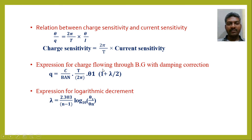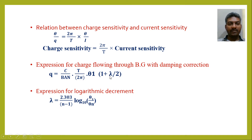The expression for charge flowing through a ballistic galvanometer with damping correction is given by q = (c/BAN) × (t/2π) × θ₁ × (1 + λ/2), where λ is the logarithmic decrement. Logarithmic decrement λ is given by λ = 2.303 / (n−1) × log(θ₁/θₙ) with base 10.